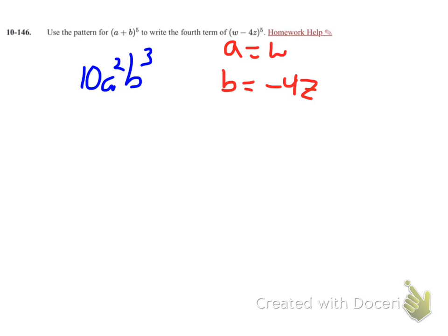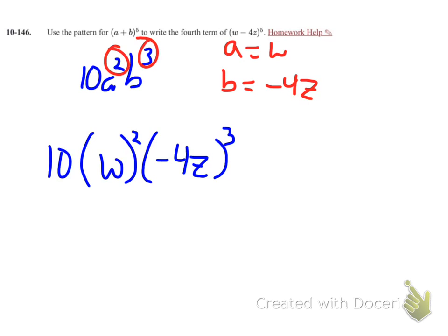and my b value is a negative 4z. So my term now is going to be 10 times w squared times negative 4z to the third. Now it's important right now to have these exponents on the outsides of the parentheses.